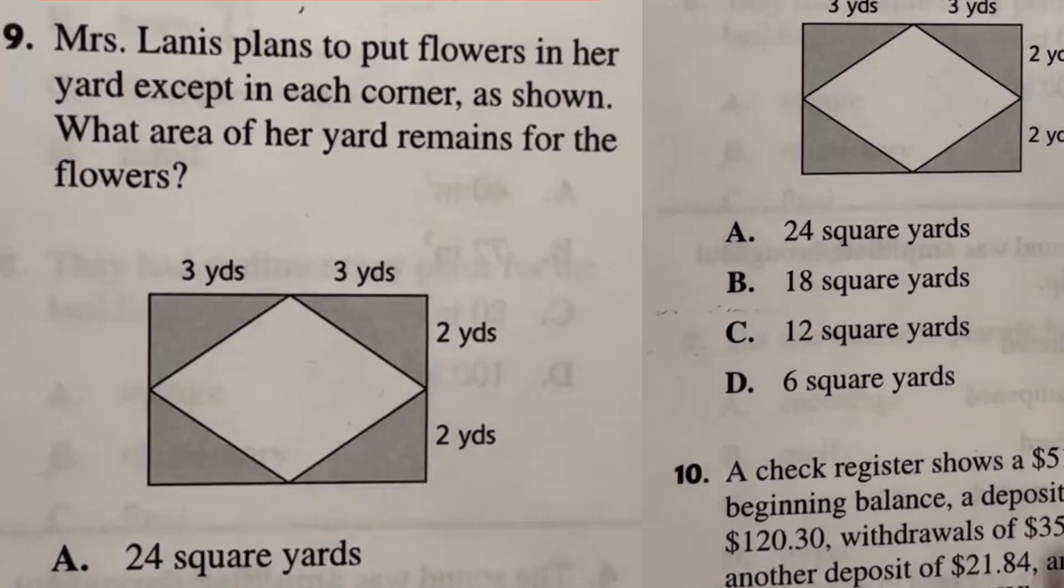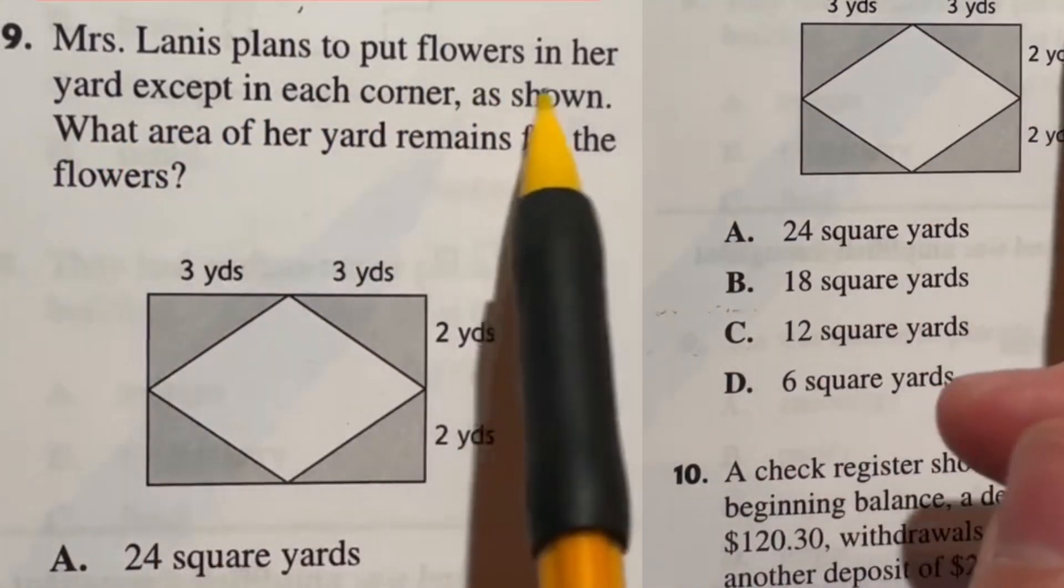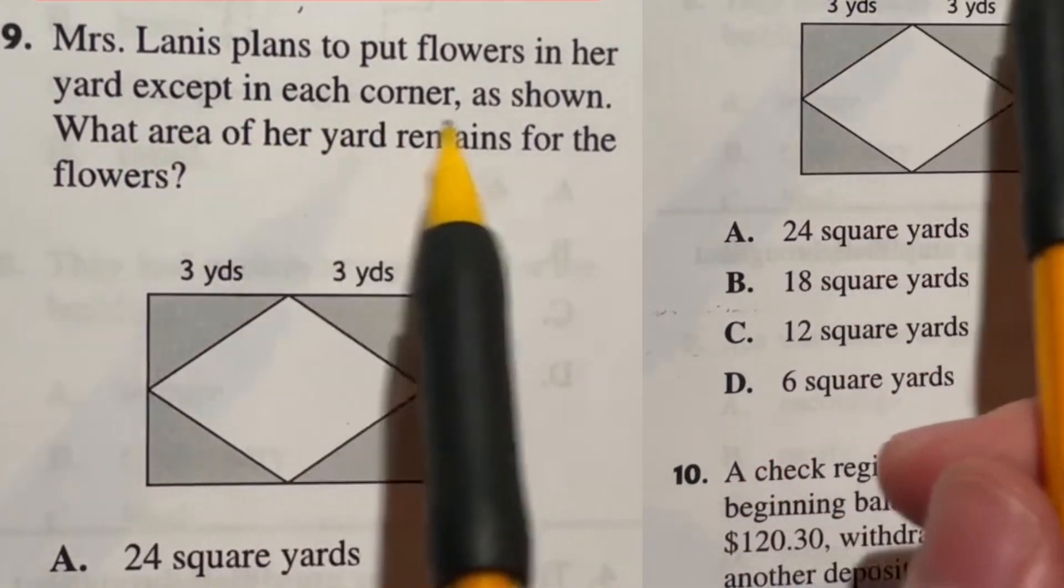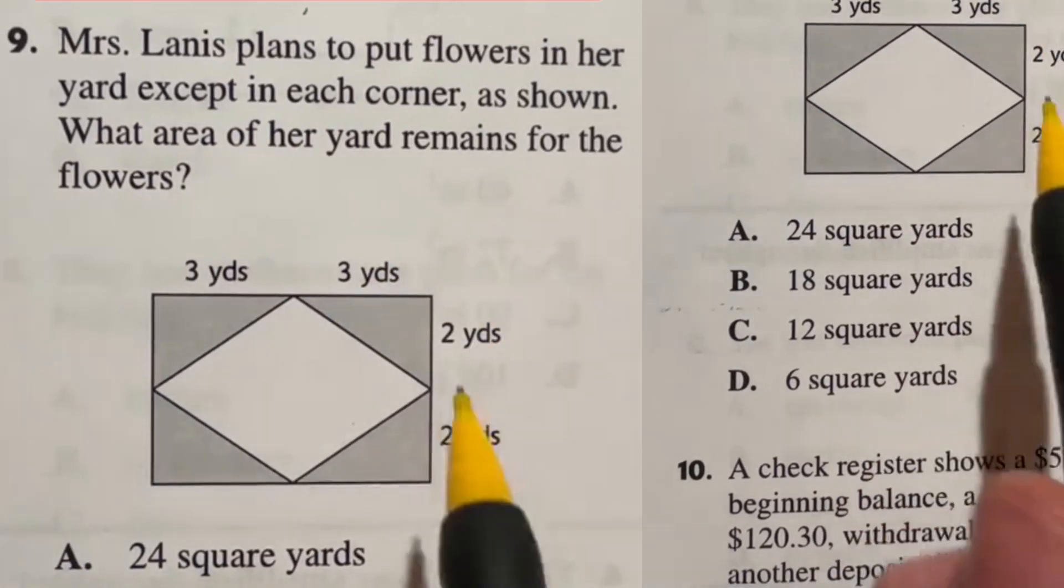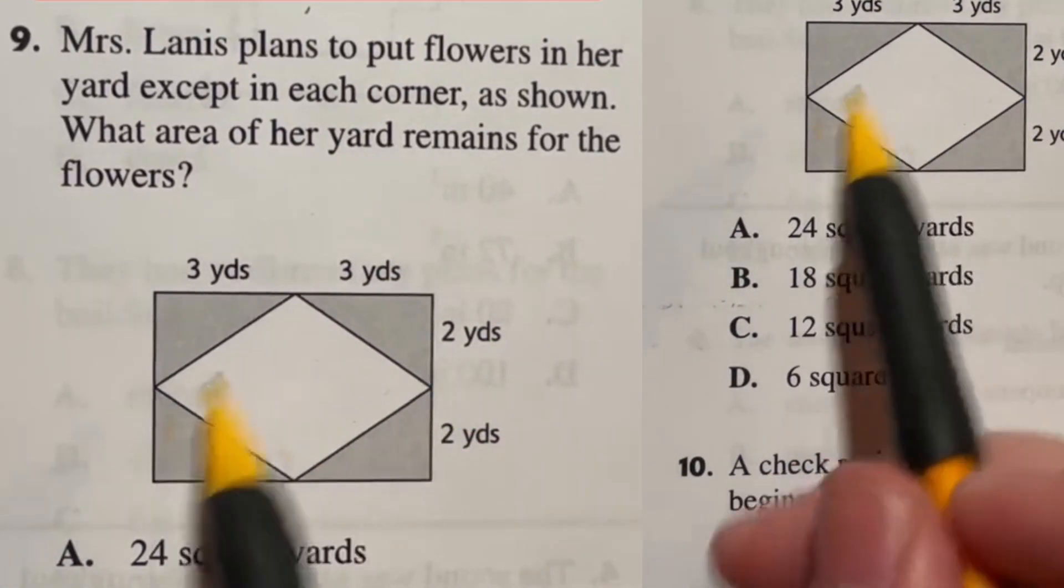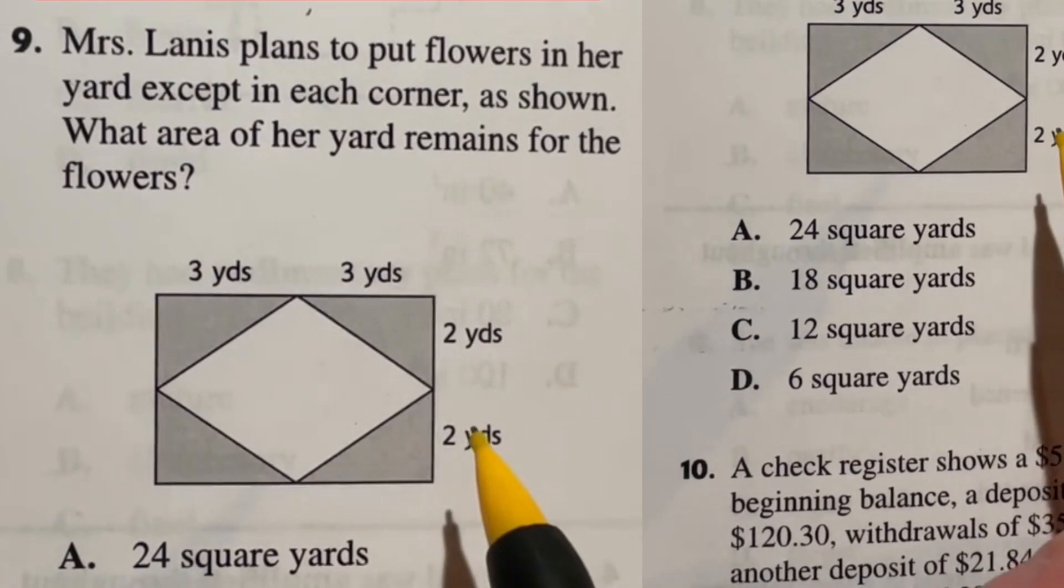Number nine here is pretty easy. It says Mrs. Linus plans to put flowers in her yard except in each corner as shown. What area of her yard remains for the flowers? So the grayed out is not getting flowers. All of this middle area is getting flowers.